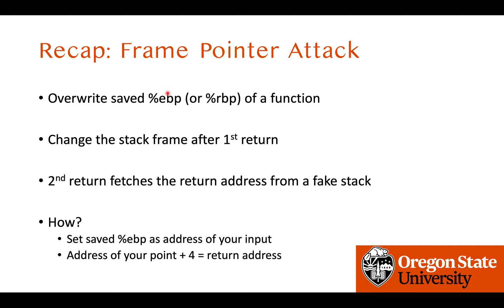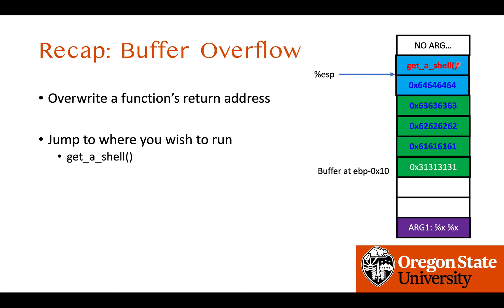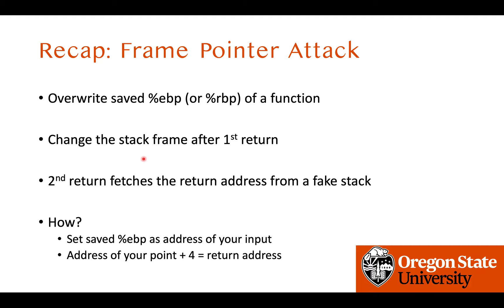Next, we learned about the frame pointer attack — how to launch a frame pointer attack. This attack covers the case where even if we cannot overwrite the return address, if we can only overwrite the saved EBP or part of it, we can change the stack frame after the first return. By carefully controlling the saved EBP and changing the stack frame on the second return, we can make the program fetch the return address from our fake stack, so finally we can control the return address on the second return. We set the saved EBP to where our input is located, and then at that address plus four we put the return address, so the second return will return to the address specified by us.